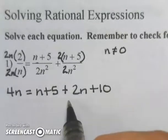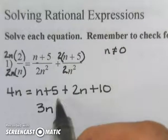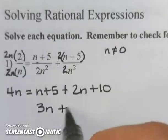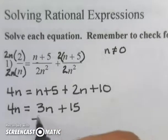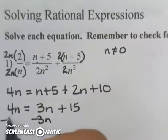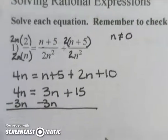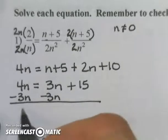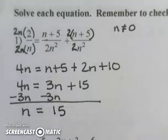I need to combine terms. I've got n and 2n, that's 3n. 5 and 10 is 15, and that still equals my 4n. Subtract 3n from both sides, since I have n's on both sides of my equation. This leaves me with n equals 15, and there is my solution to this problem.